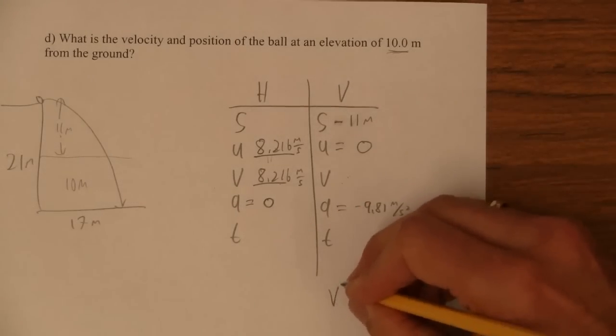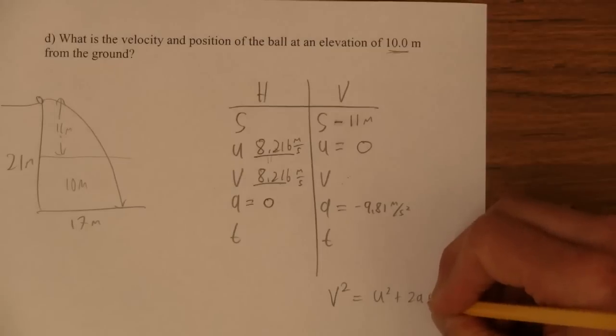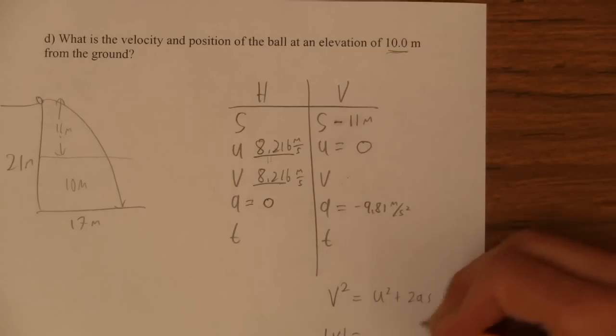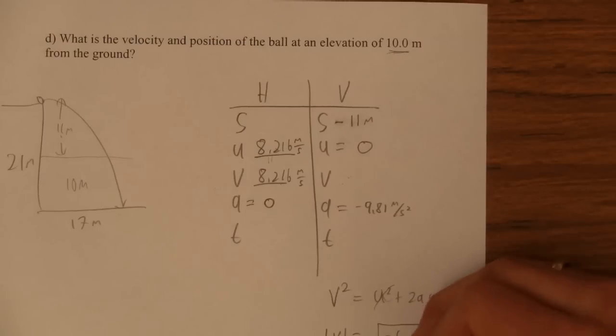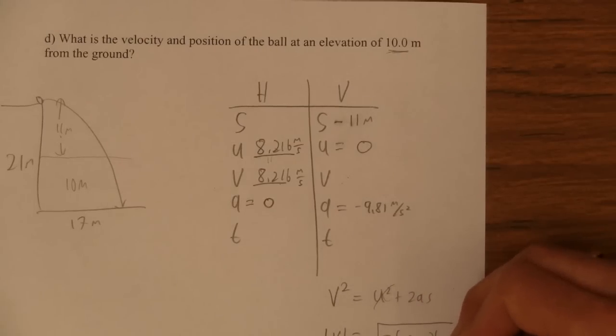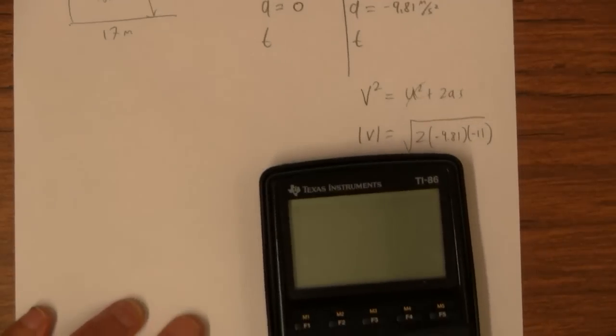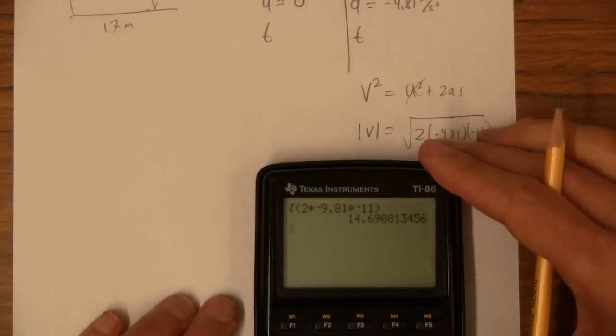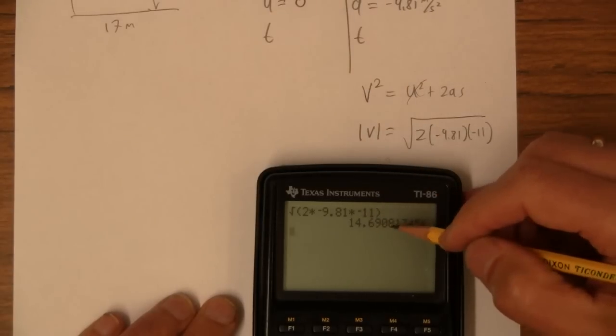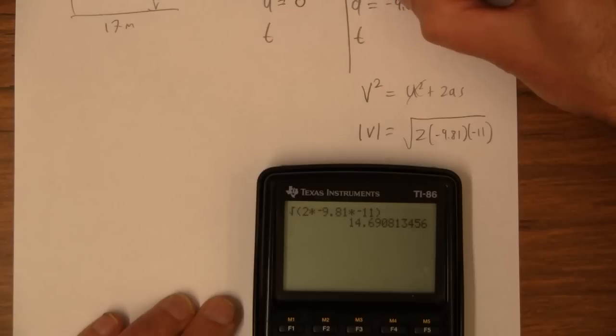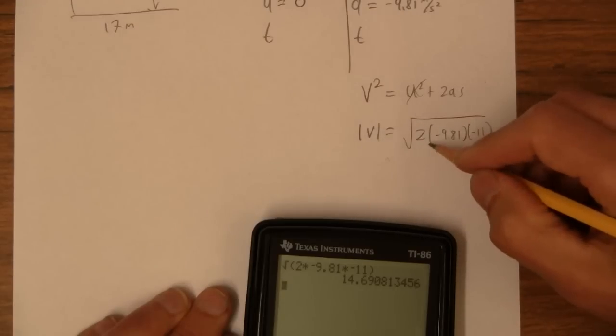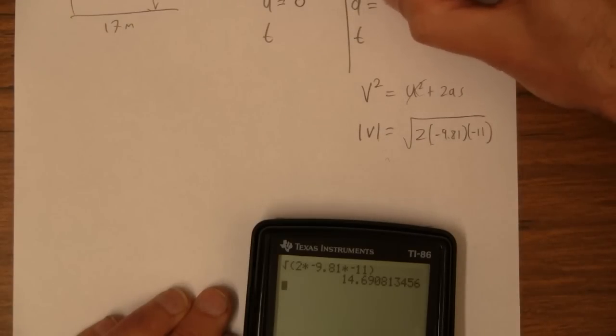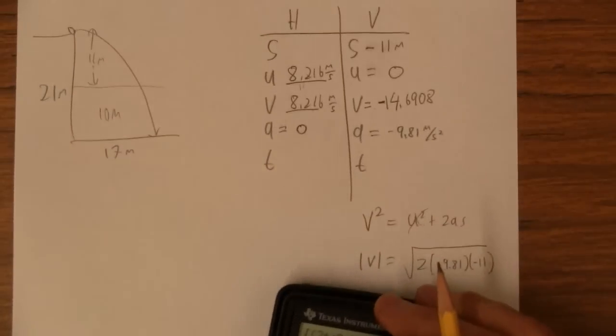I can find the final velocity using v squared is u squared plus 2as. So the absolute value of v is the square root of 2 times negative 9.81 times negative 11. Square root of 2 times... I'll type the minus signs in. 14.6908. Now this thing is definitely moving downward since that's the absolute value of it. I'm justified in putting a minus sign there. Were it moving up I'd make it positive but it's definitely negative.